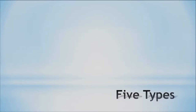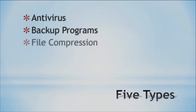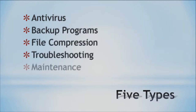So we actually have five different categories of utilities that we'll look at. You can see them appearing here. We have antivirus, backup programs, file compression, troubleshooting, and maintenance. Each of these has their own use and reason for running them.